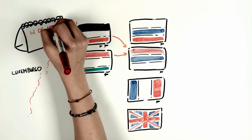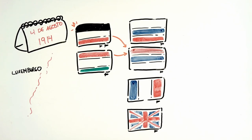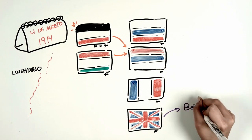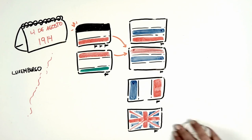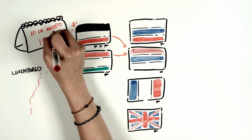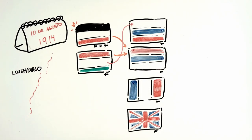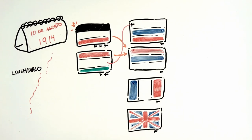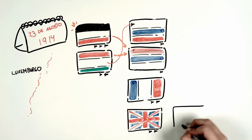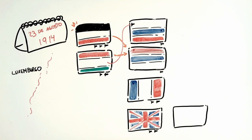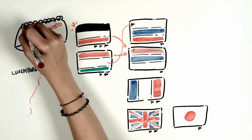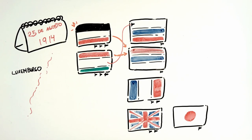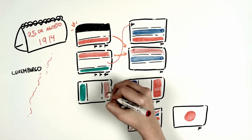On August 4th, Britain declared war on Germany for not respecting the neutrality of Belgium — by trying to pass its troops through that country. On August 10th, the Austro-Hungarian Empire attacked Russia, and consequently on August 12th, Britain and France declared war. On August 23rd, Japan, which had signed an alliance with Great Britain in 1902, declared war on Germany. On August 25th, Australia declared war on Japan. Italy, despite being part of the Triple Alliance, remained neutral until 1915.